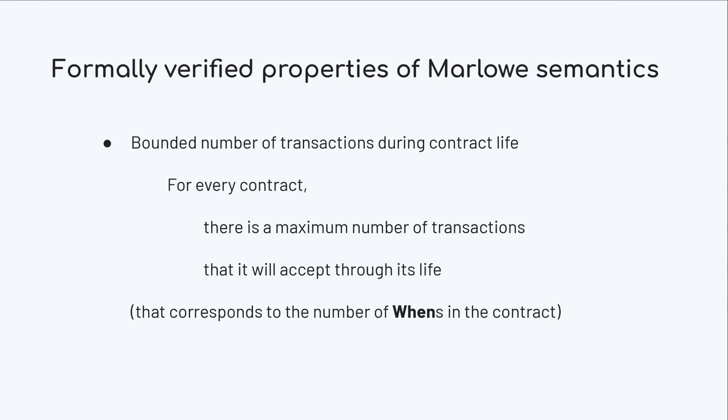Lastly, there is a bound to the number of transactions that can happen through the life of a contract. This makes sense because each when can only take one input, and all transactions have to reduce the size of a contract. So at maximum you can have one transaction per when, and by then the contract will be closed.